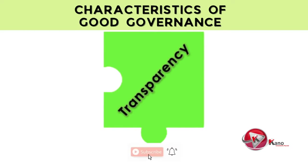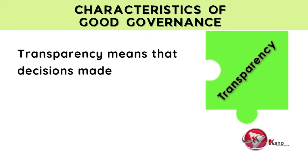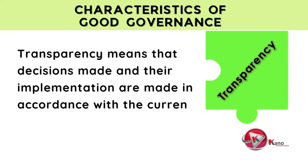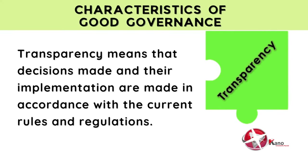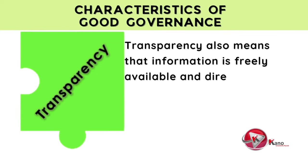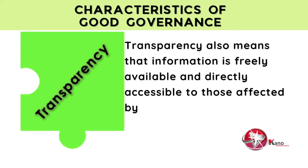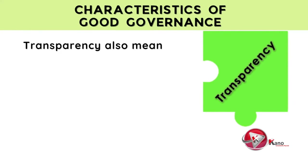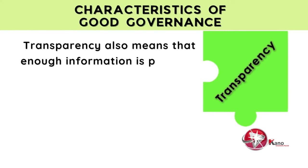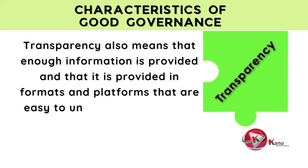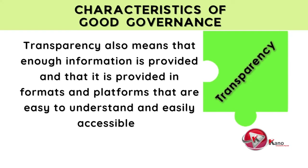The next characteristic of good governance is transparency. Transparency means that decisions made and their implementation are carried out in accordance with current rules and regulations. It also means that information is freely available and directly accessible to those affected by such decisions and their enforcement, and that this information is provided in formats and platforms that are easy to understand and easily accessible.